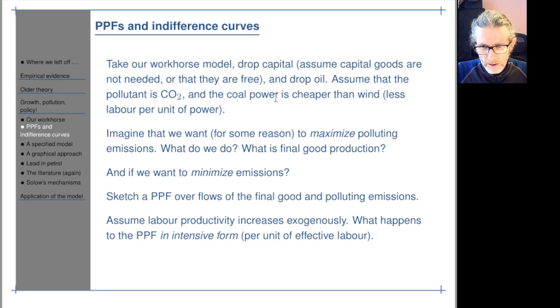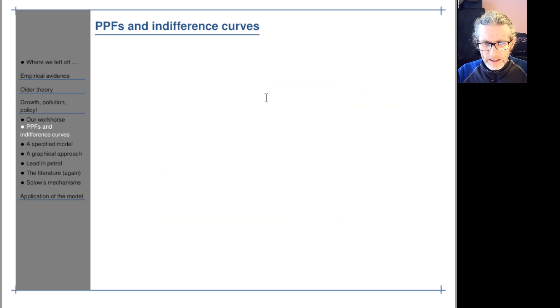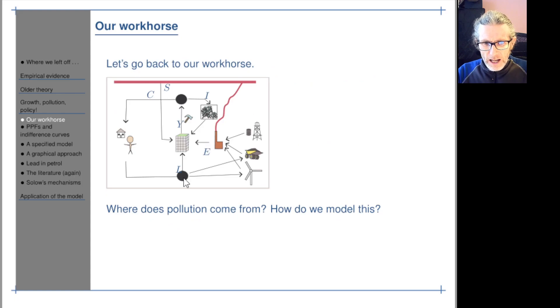Imagine that we want, for some reason, to maximize polluting emissions. What do we do then? We put all our efforts, we send everybody to the mines to dig up coal, put it into the power stations and burn it off. We don't send anybody to the final good production sector at all. There's no production of final goods. Everyone goes here.